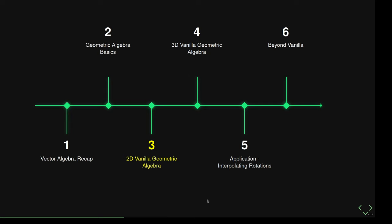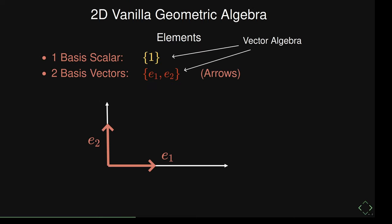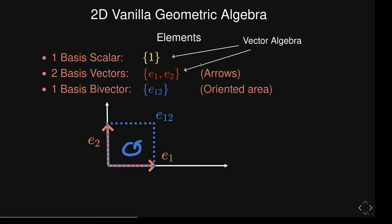Now let's do something useful: two-dimensional vanilla geometric algebra. First, what elements do we have? Like ordinary vectors, we have scalars and basis vectors — that's what you probably already know. But in geometric algebra we also have a new kind of element composed of two basis vectors: E12. It represents the plane spanned by those two basis vectors. That's all we have in two dimensions, and we've been completely ignoring this other part that's already there naturally.